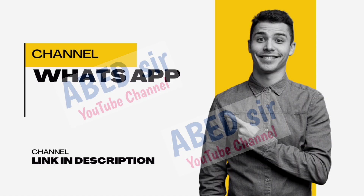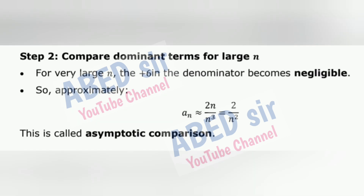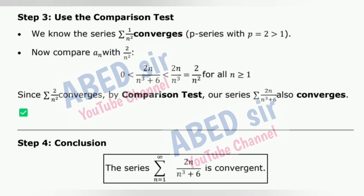Next important short question 3: Determine the nature of the series. The general term of the series is aₙ = 2n/(n³ + 6). We need to check if the series converges or diverges. Step 1: For very large n, the +6 in the denominator becomes negligible, so approximately aₙ ≈ 2/n². Step 2: Use the comparison test. We know the series Σ(1/n²) converges — it is a P-series with P = 2 > 1. Comparing aₙ with 2/n², since Σ(1/n²) converges, by the comparison test our series also converges.